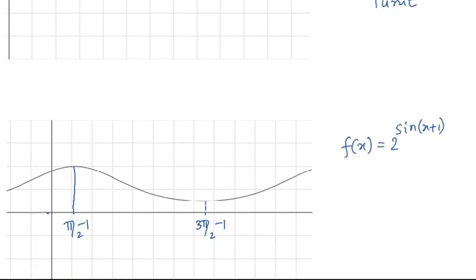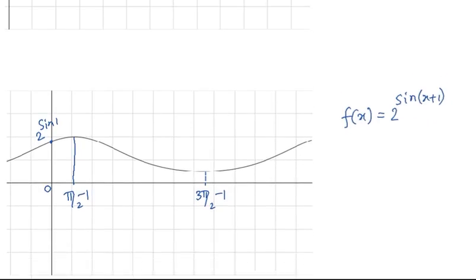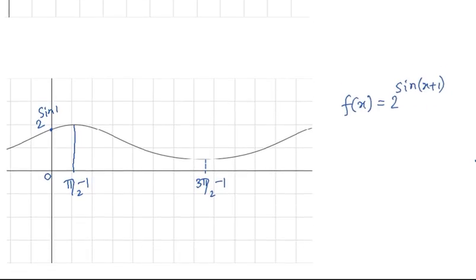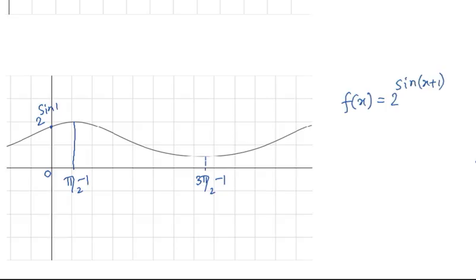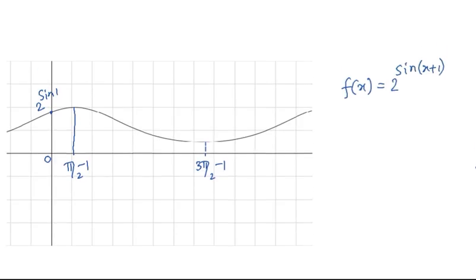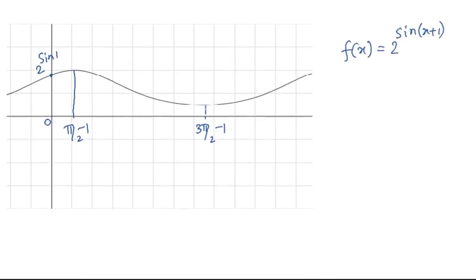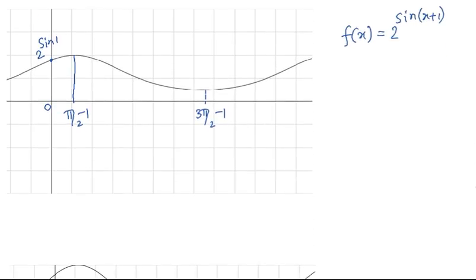You can see that at x = 0, the value is 2^(sin 1 radian). This is the graph of f(x) = 2^(sin(x + 1)).